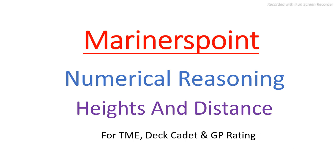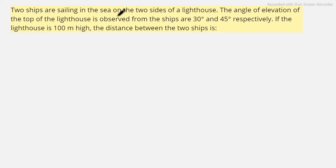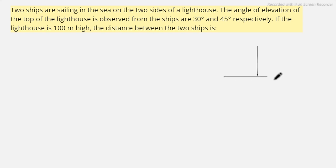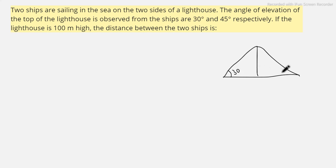The first question is: two ships are sailing in the sea on the two sides of a lighthouse. The angle of elevation of the top of the lighthouse observed from the ships are 30 degrees and 45 degrees respectively. The lighthouse is 100 meters high. Find the distance between the two ships. I will draw the figure — this is the lighthouse and two ships are on either side, one at 30 degrees and the other at 45 degrees.